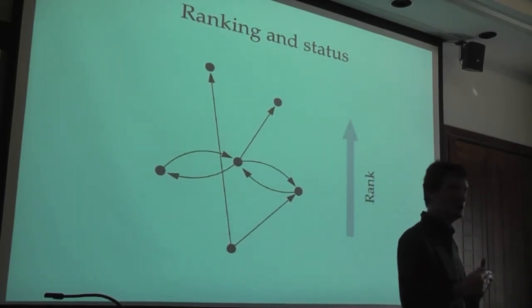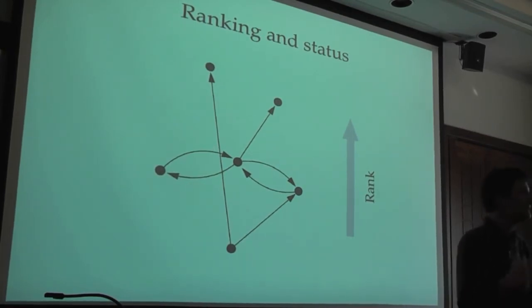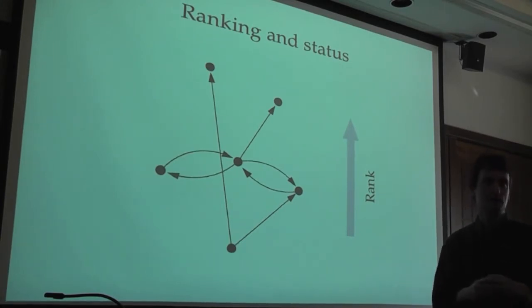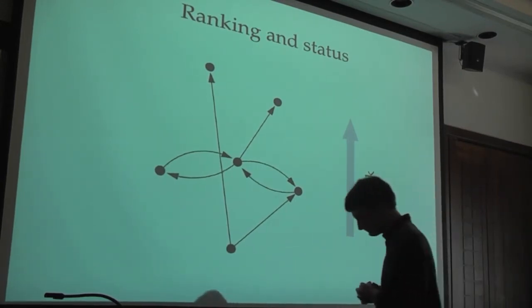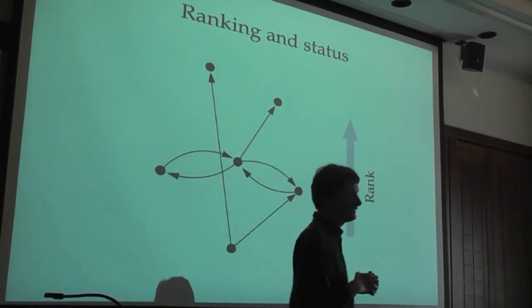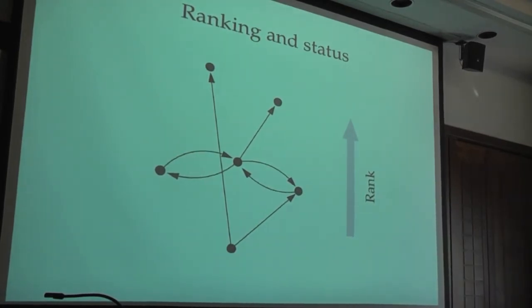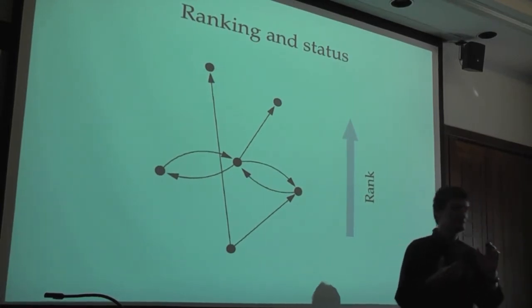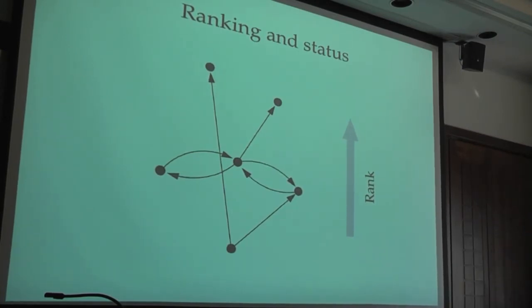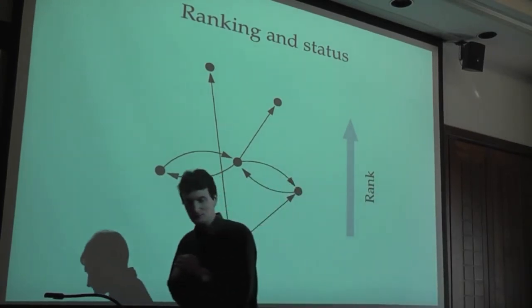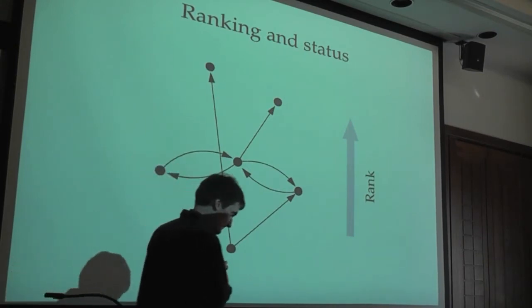We decided to look at this differently — maybe rather than treating it as a defect in the data, this is telling us something. Maybe there is a signal hidden in the directions of the edges. After thinking about this and playing with the data, we came up with a hypothesis: in the school there exists some ranking of kids from high to low, and the one-way friendships tend to point from lower-ranked individuals to higher-ranked individuals.